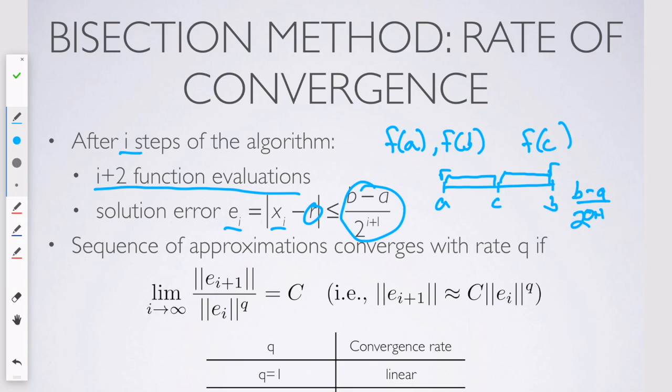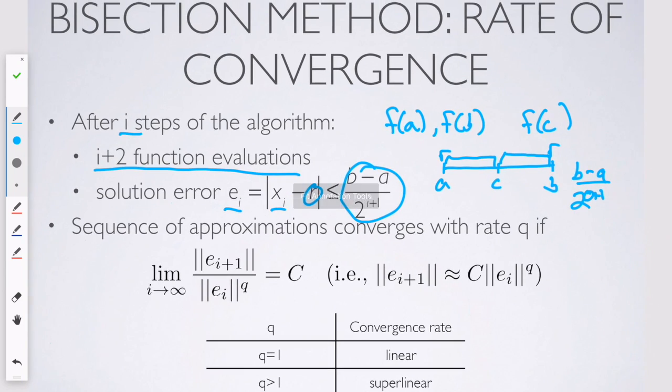So that's really kind of a fundamental result to know about the bisection method, is that error bound. And then we can talk about convergence.